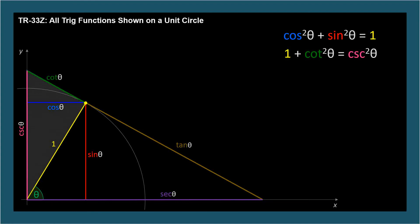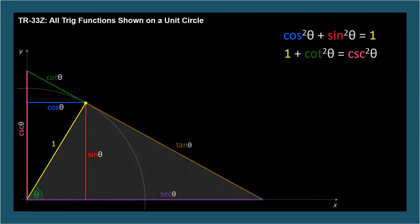Which we get by dividing the first identity by cosine squared theta. And this triangle corresponds to tangent squared theta plus 1 equals secant squared theta, the last Pythagorean identity, which is the first divided by sine squared theta.